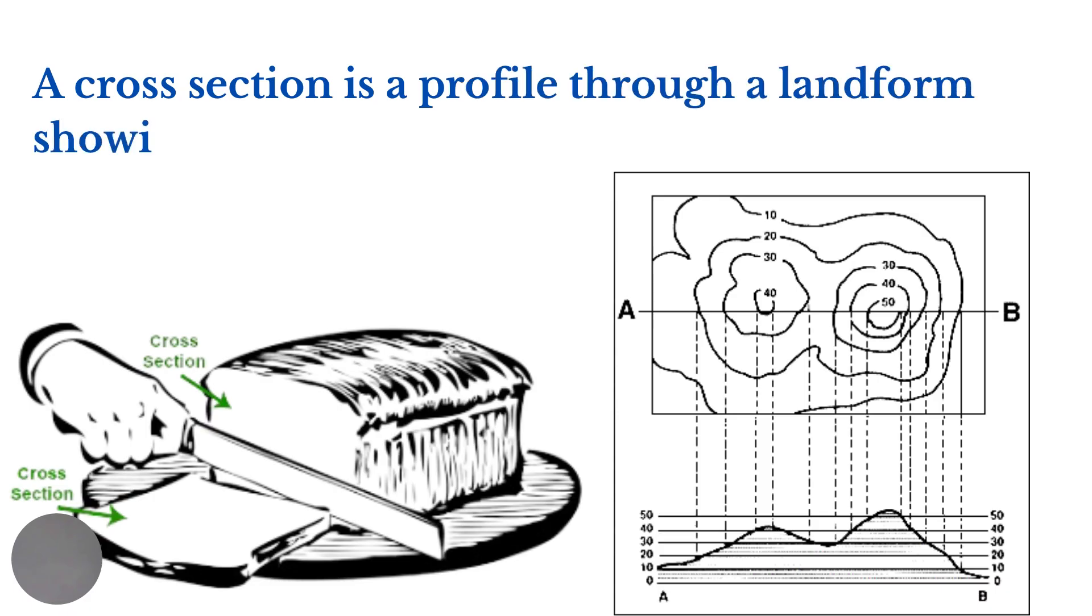Now a cross section is the shape that you create when you cut through an object. Notice that if a loaf of bread is cut through, the cross section is in the shape of a slice of that bread.